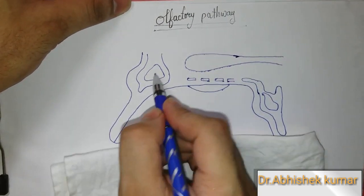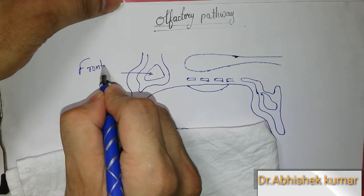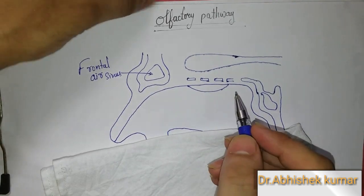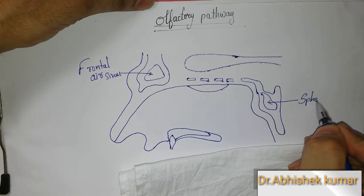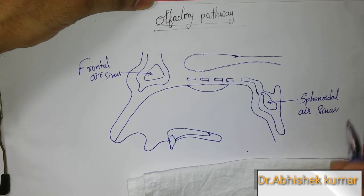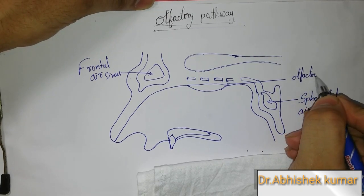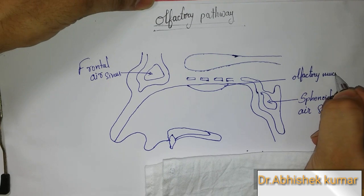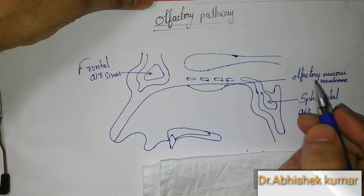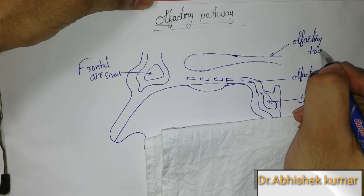This is the olfactory bulb and olfactory tract. The frontal air sinuses are present here, and the sphenoidal air sinuses are here. Now I am labeling the olfactory mucous membrane. Above it is the cribriform plate of ethmoid, and this one I am labeling is the olfactory tract.